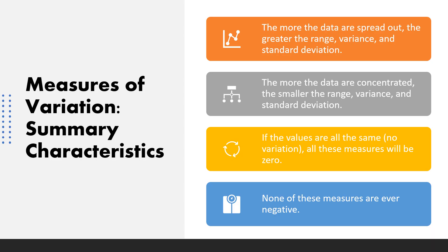Some key characteristics of variation to know: when more data is spread out, range, variance, and standard deviation are greater. When data is more concentrated, those measures are smaller. If all values are the same, there is no variation and all measures will be zero. Remember, measures of variation are never negative — they are always either positive or zero.